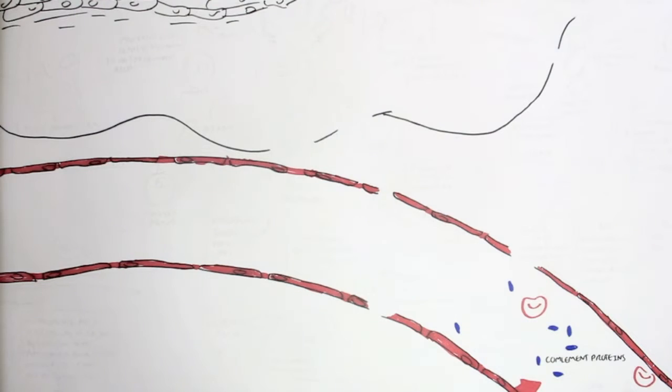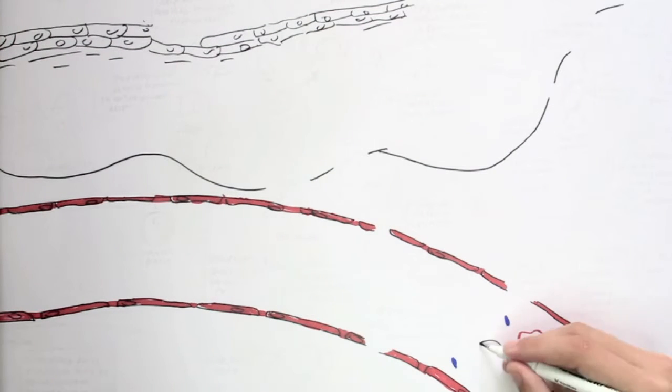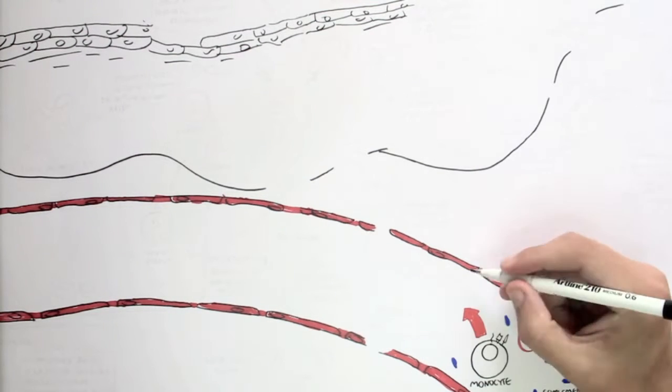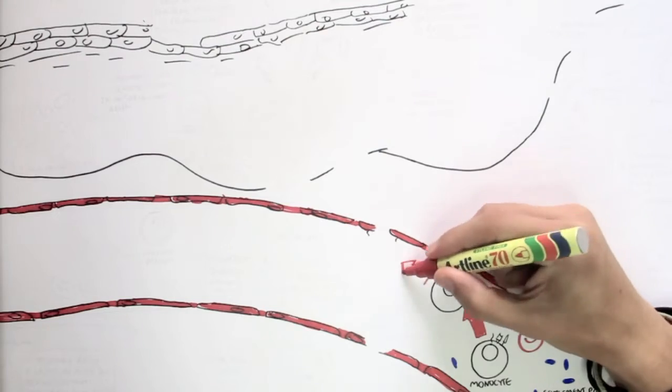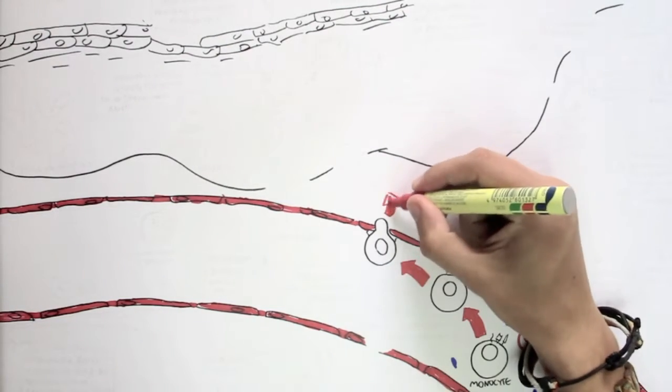Circulating around we have all those different leukocytes. Let's look at a monocyte which is circulating around. Now when it enters a tissue, it binds to receptors on the surface of epithelial cells where it will successfully migrate. And when it migrates into a tissue, it will become a macrophage.